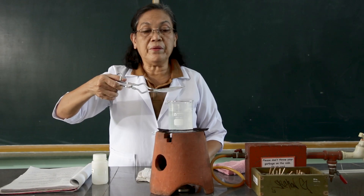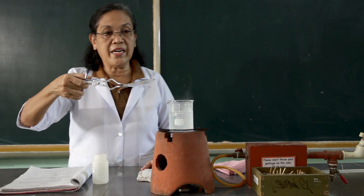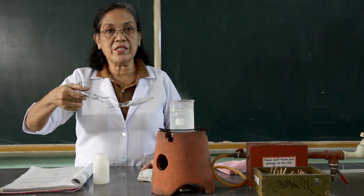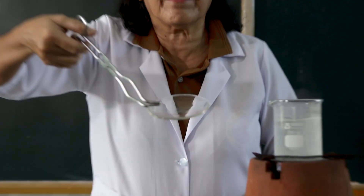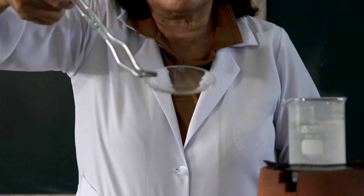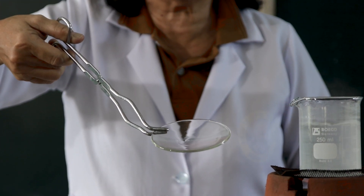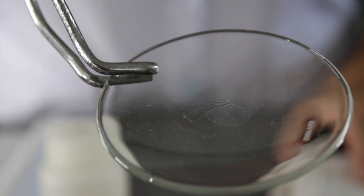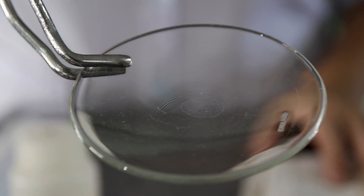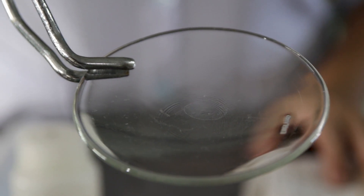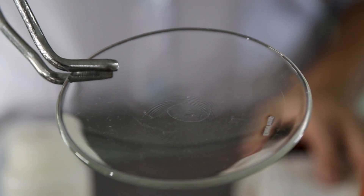Now, we have already evaporated off the ammonium hydroxide, and this is how it looks like. Now, observe what happens. This is the evaporated ammonium hydroxide.